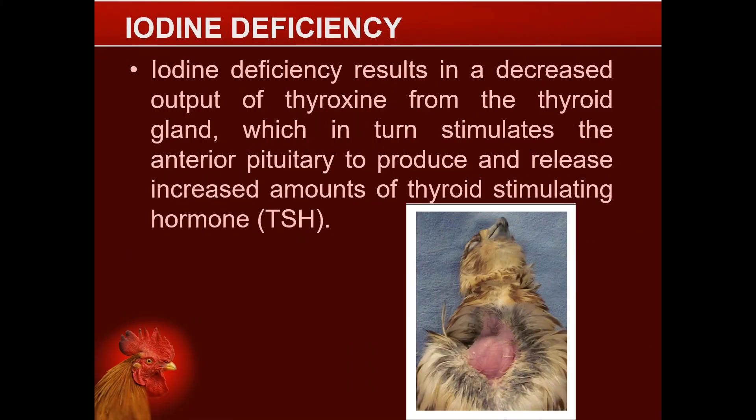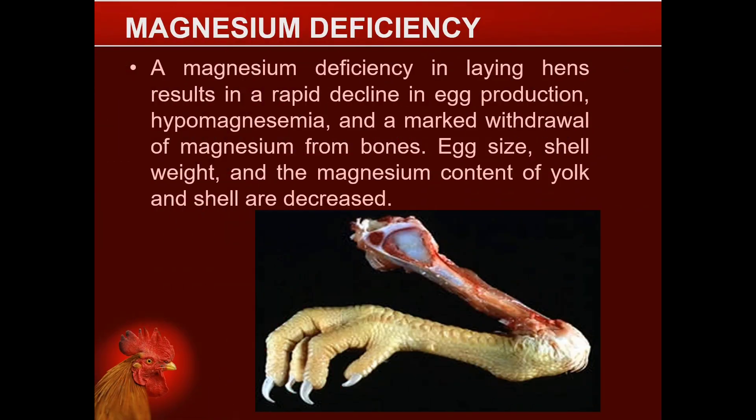Iodine deficiency results in a decreased output of thyroxine from the thyroid gland, which in turn stimulates the anterior pituitary to produce and release increased amounts of thyroid-stimulating hormone, or TSH. Iodine deficiency in laying hens results in a rapid decline in egg production, hypomagnesemia, and a marked withdrawal of magnesium from bones.